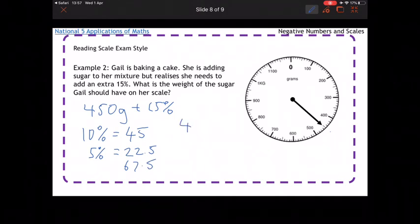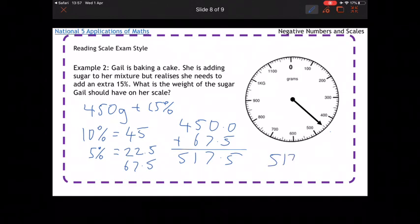which is the 15%. Then what lastly we've got to do is add 450 and 67.5, and that'll give us how much it should be in total. So 517.5 grams will be what it should be, the weight on our scale.